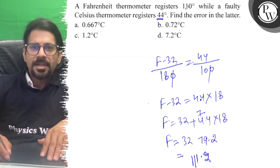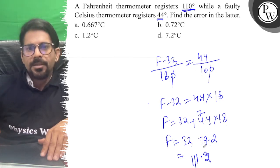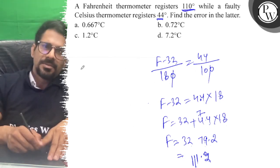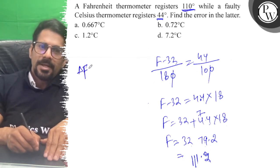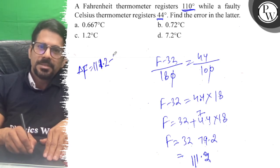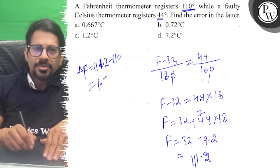And this is how much it is reading? 110. So the error comes, the delta F is 111.2 minus 110, so that is 1.2 degrees Celsius.